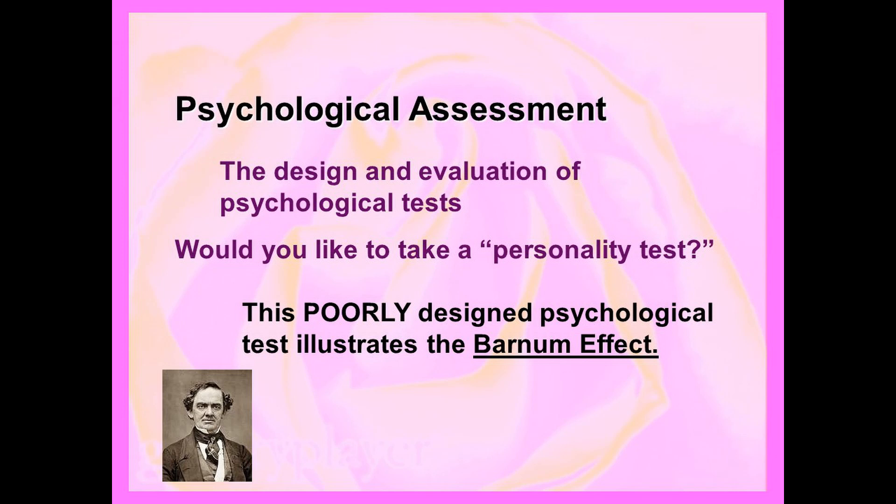Number five: disciplined and self-controlled outside, you tend to be worrisome and insecure inside. Number six: at times you have serious doubts as to whether you have made the right decision or done the right thing. Number seven: you prefer a certain amount of change and variety, and become dissatisfied when hemmed in by restrictions and limitations.